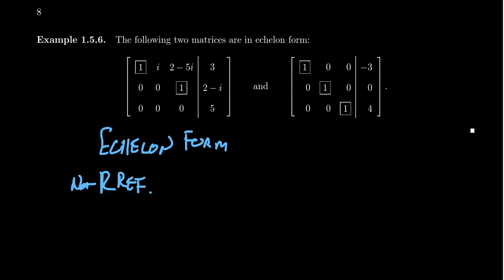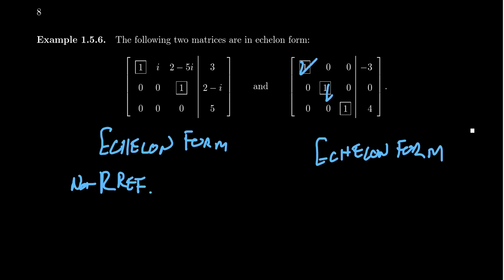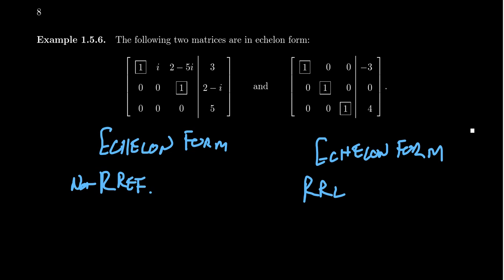On the other hand, take a look at this next matrix. There are no rows of zeros, so condition one is satisfied automatically. The pivots make a downward staircase, and there are zeros below the pivots, so this is in echelon form. Furthermore, each pivot is a 1, and every number above a pivot is also 0 — the augmented column doesn't factor into this consideration. So this matrix is in row-reduced echelon form. Every RREF matrix is an echelon matrix, but not every echelon matrix is RREF.